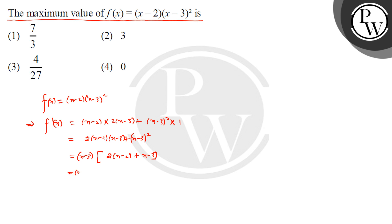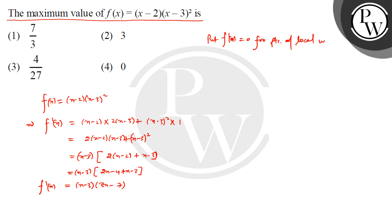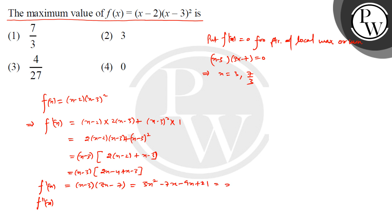This simplifies further: (x - 3) multiplied by [2(x - 2) + (x - 3)], which is (x - 3)(3x - 7). Setting f'(x) = 0 to find the points of local maxima and minima, we get (x - 3)(3x - 7) = 0, giving x = 3 and x = 7/3.